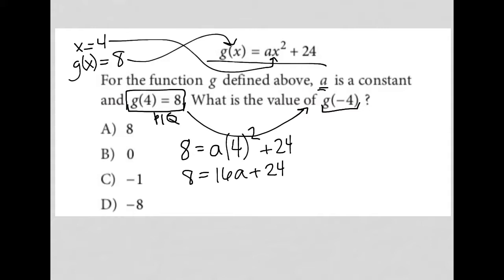I subtract 24 from both sides. I get -16 equals 16a. And therefore, a is equal to -1. So now I know what my constant a is, which is -1.